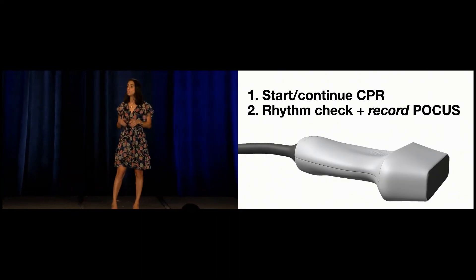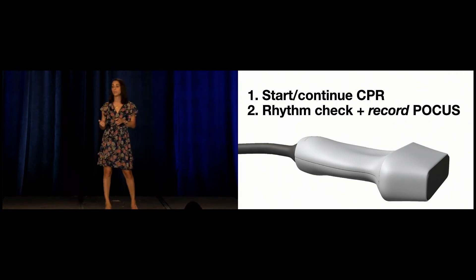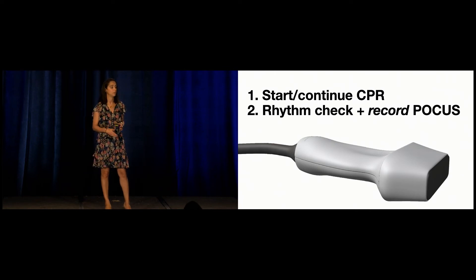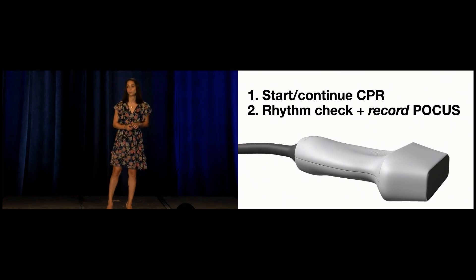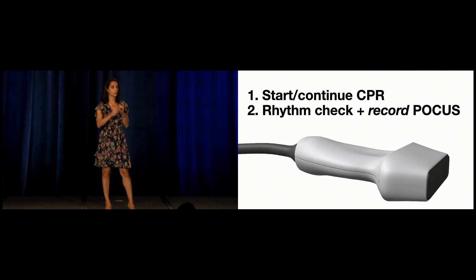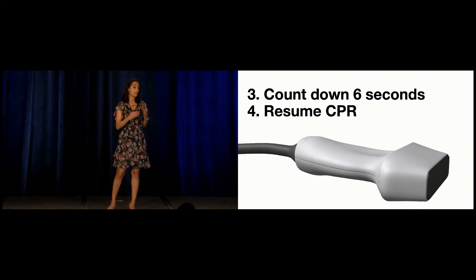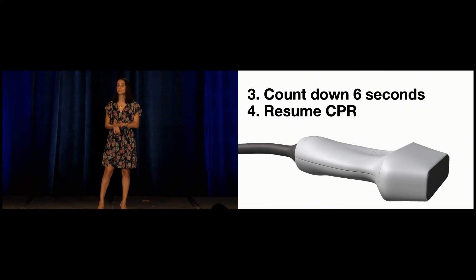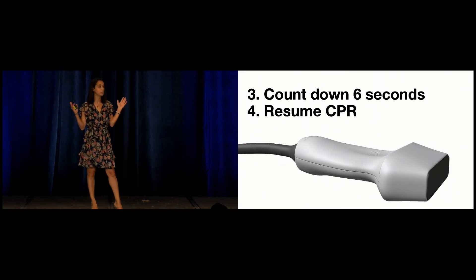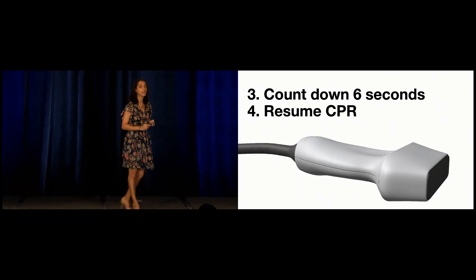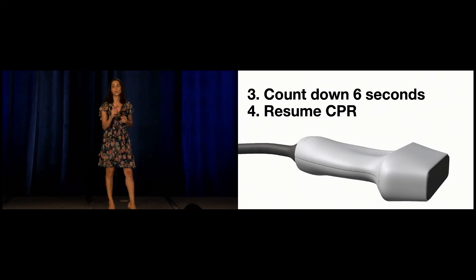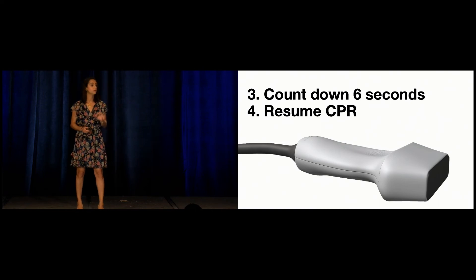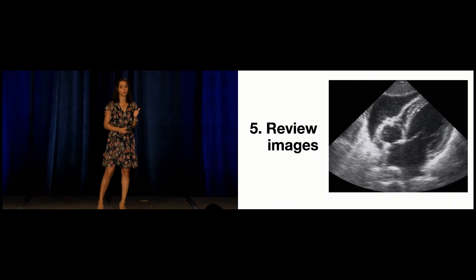You're going to initiate or continue CPR, and at your next rhythm check is when you incorporate ultrasound. When they pause, wheel the machine over and put the probe on. Assign someone to count down — six, five, four, three, two, one — then back to CPR. During that rhythm check pause is when you do your echo. Take a recording; we're not making decisions in that moment. Resume CPR, then go back and review your images while CPR is ongoing.